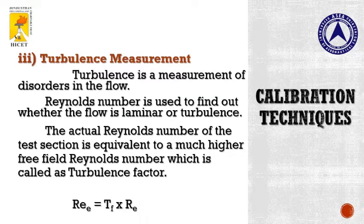Turbulence measurement is very important because the flow in the test section should be laminar. If it is turbulent, you cannot take measurements easily, as proper measurements cannot be done in turbulent flow. We have to know the intensity of turbulence inside the test section using this formula: Re' = TF × Re, where Re' is the effective Reynolds number, TF is the turbulence factor, and Re is the Reynolds number. Reynolds number is used to define whether the flow is turbulent or laminar — above 4000 it is turbulent, below 4000 it is laminar.